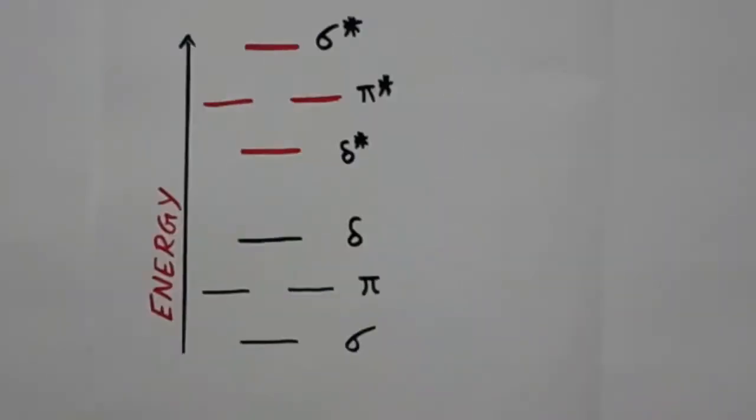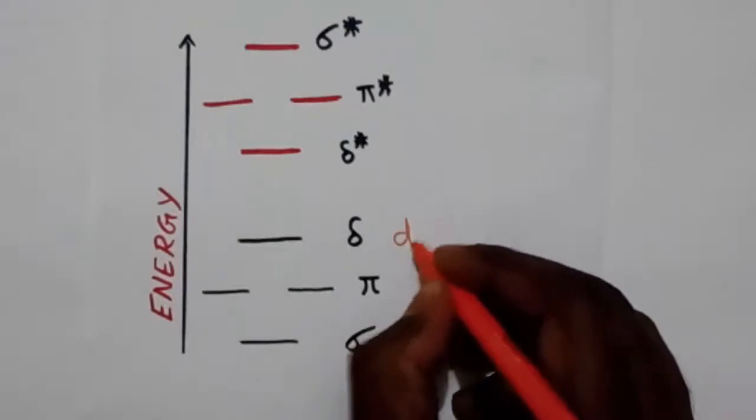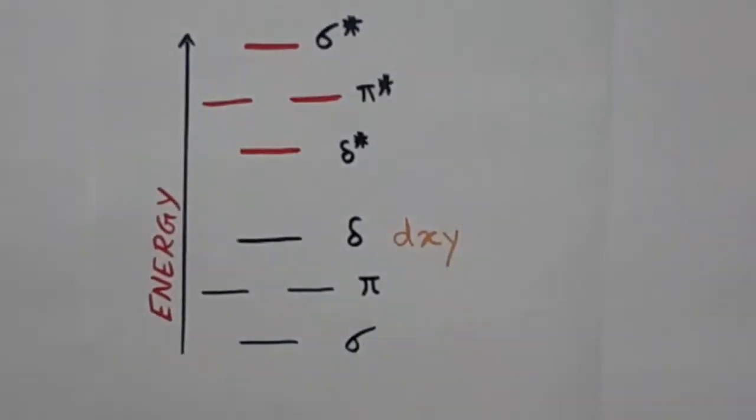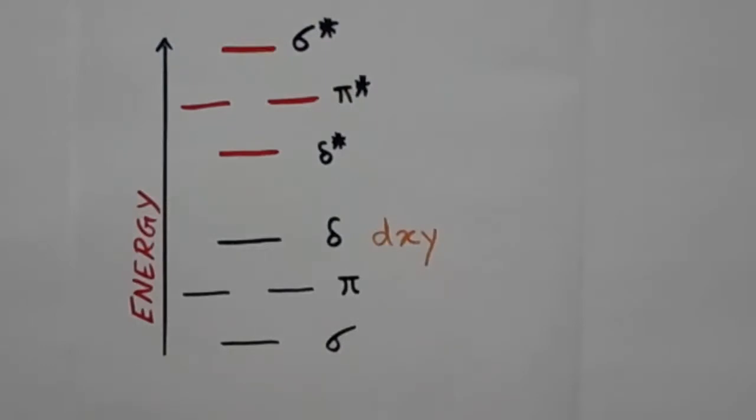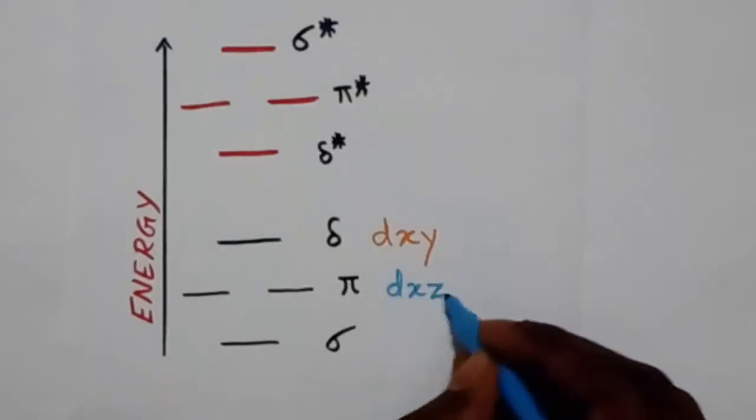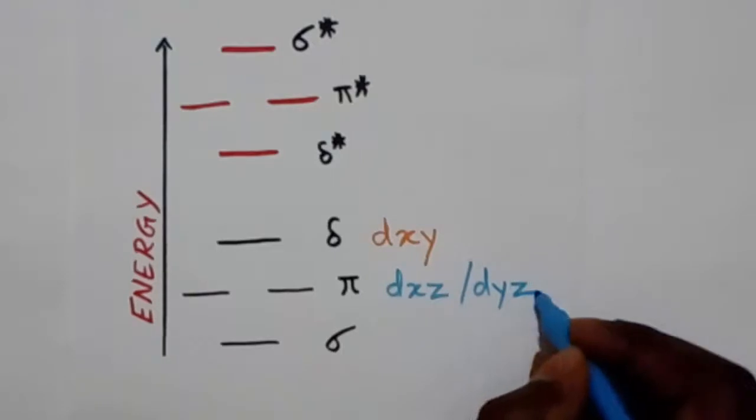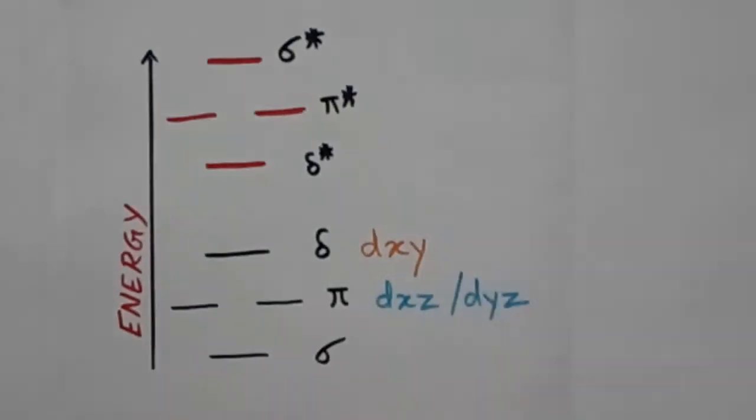The delta orbital is formed by the linear combination of dxy orbital. The pi orbital is formed by the combination of dxz and dyz. The sigma orbital is formed by the combination of dz square orbital.